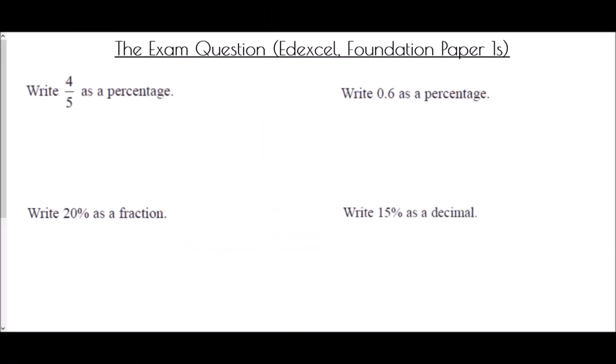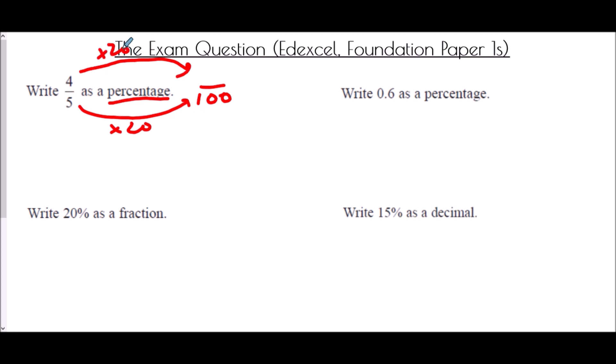Finally we come to exam questions taken from four different Edexcel Foundation Paper 1s — this is a very regular topic, usually within the first two or three questions. First question: write four fifths as a percentage. We want a fraction out of 100. Five goes into 100 twenty times, so multiply by 20 on both top and bottom: 4 times 20 is 80. Four fifths as a percentage is 80 percent.